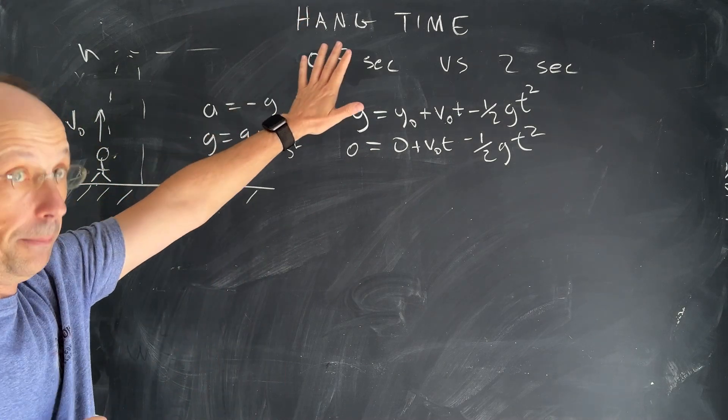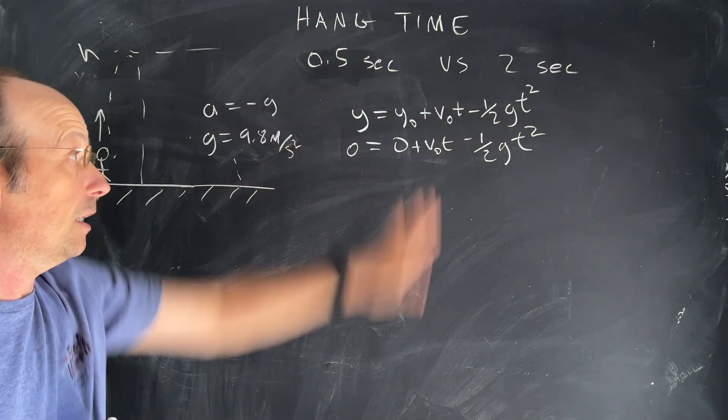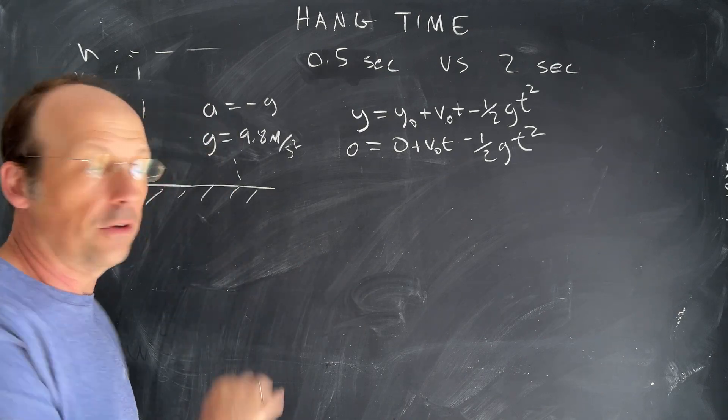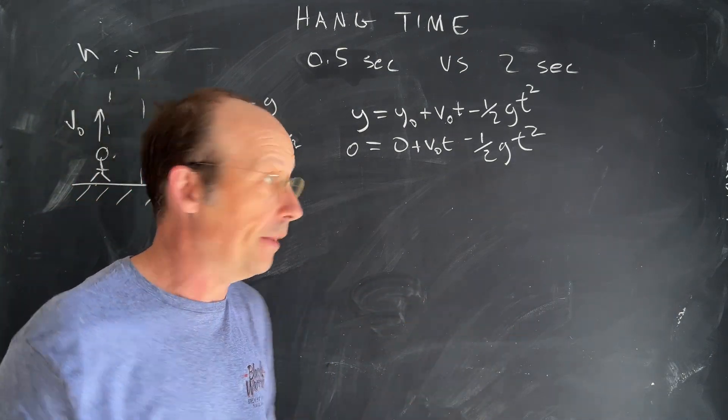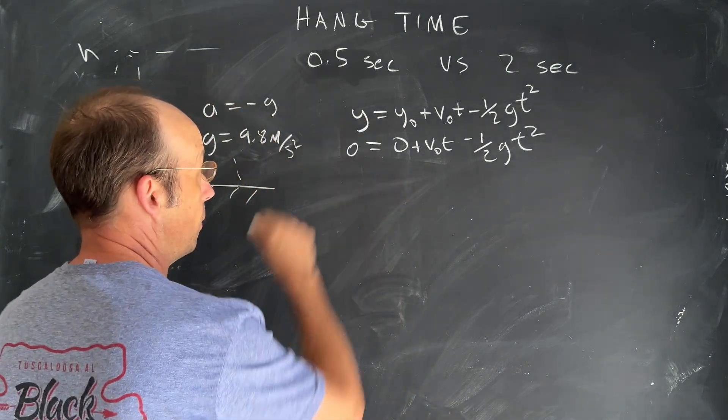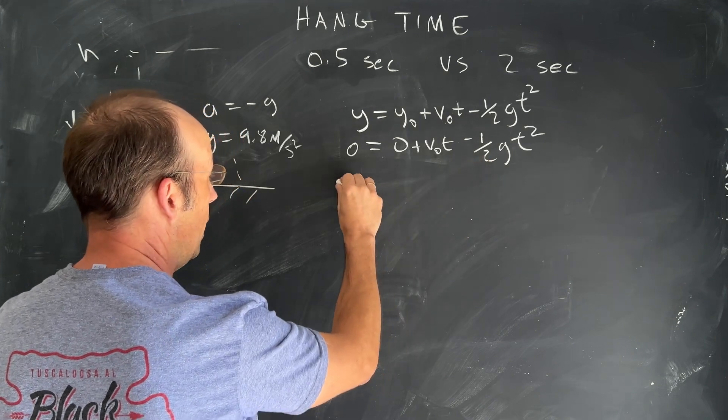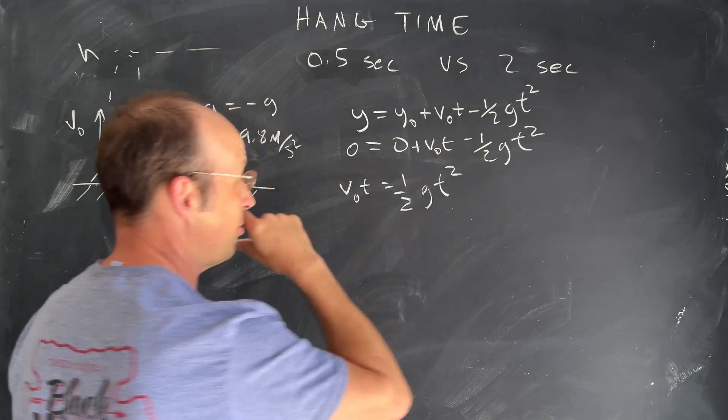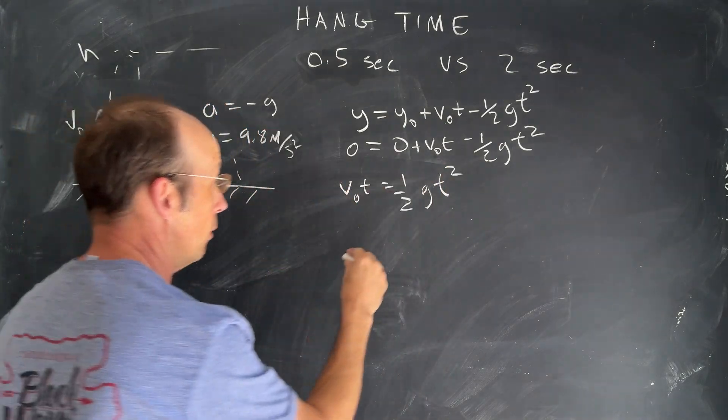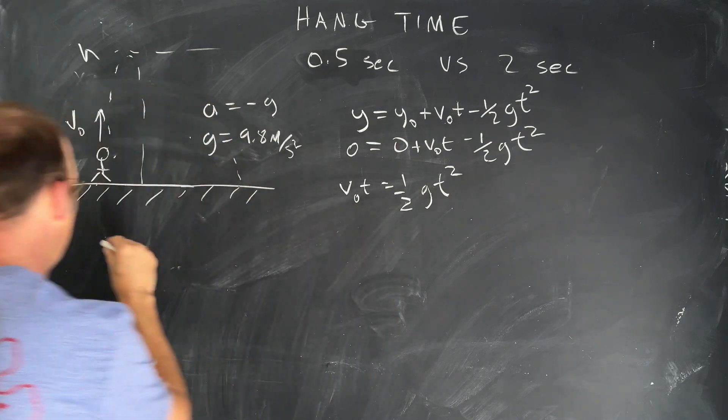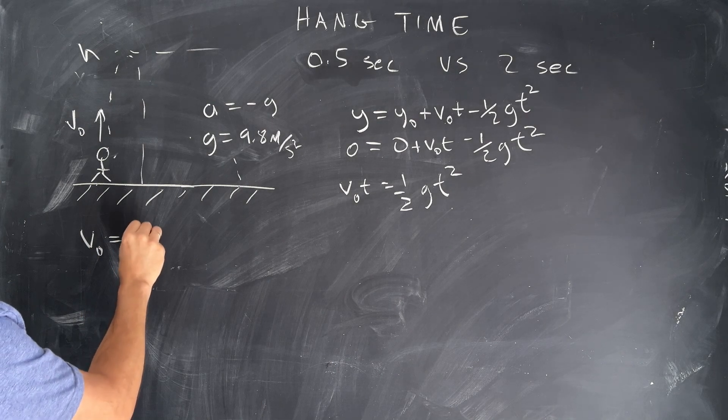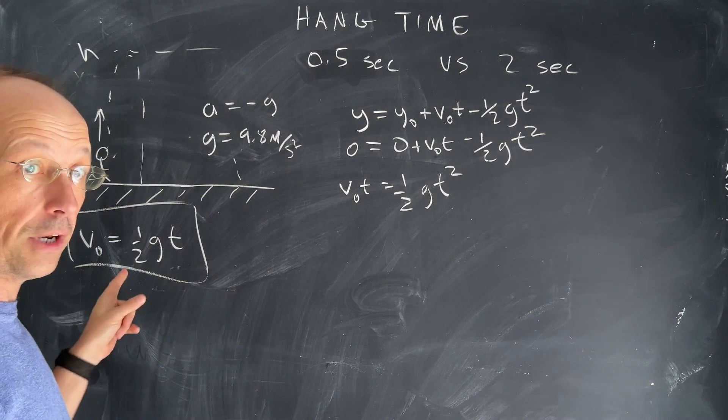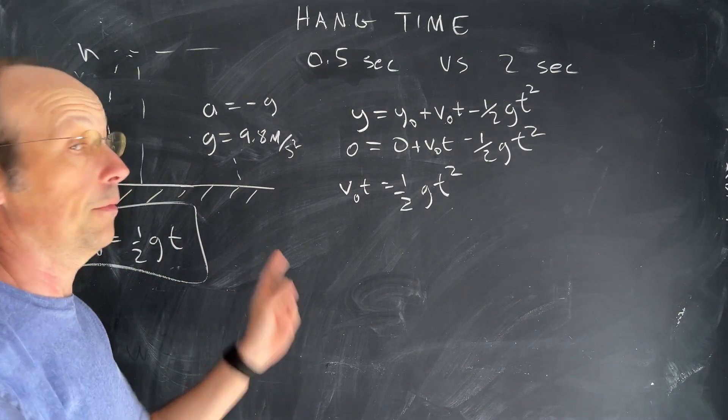So let's solve this, assuming that I know the time, right, 0.5 seconds, two seconds, whatever. Let's solve this for the velocity needed to have that time. And there's more than one way to do this. And that's what's great about the kinematics. But I like this way. I like starting with that equation. So I'm going to add this to both sides. And I get v zero t equals one half g t squared. And then divide both sides by t. And I get this very important thing I write over here, v zero equals one half g t. So that's the velocity that you need in order to have the hang velocity, the hang time that you want.